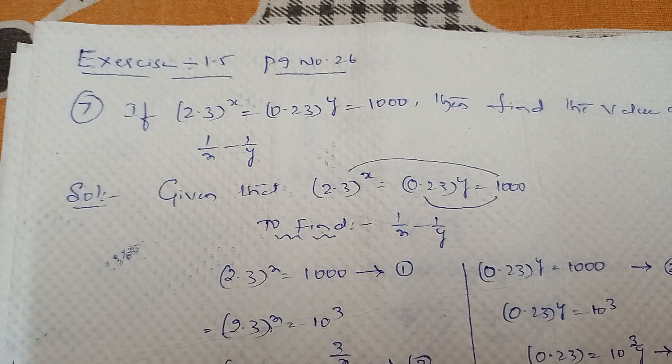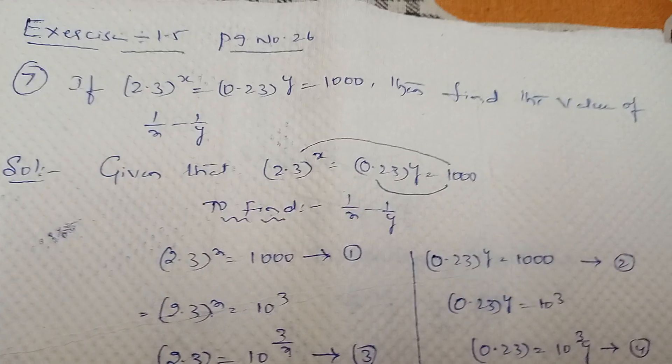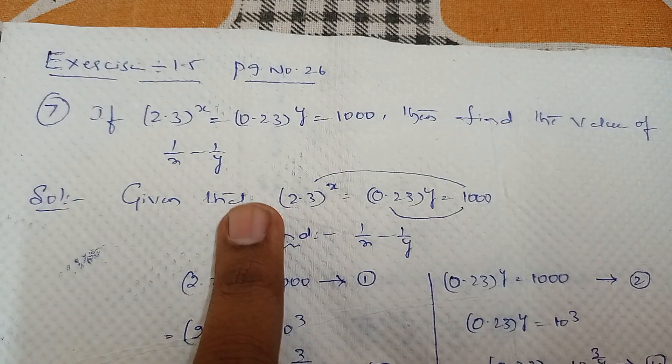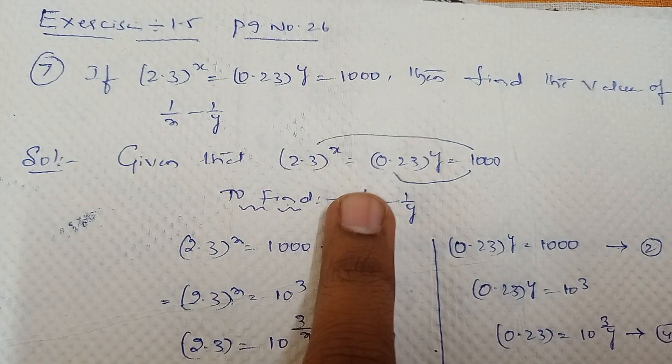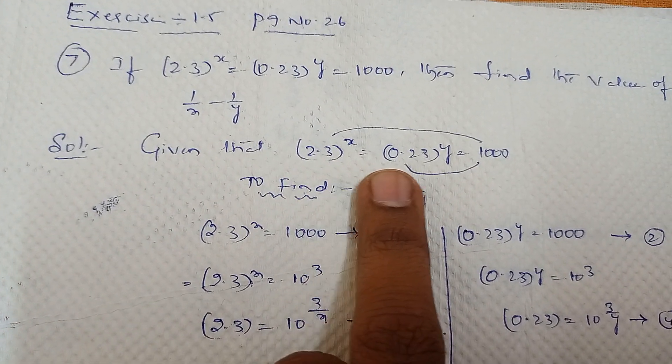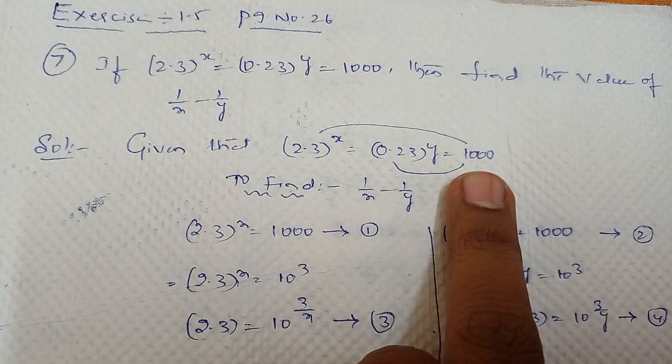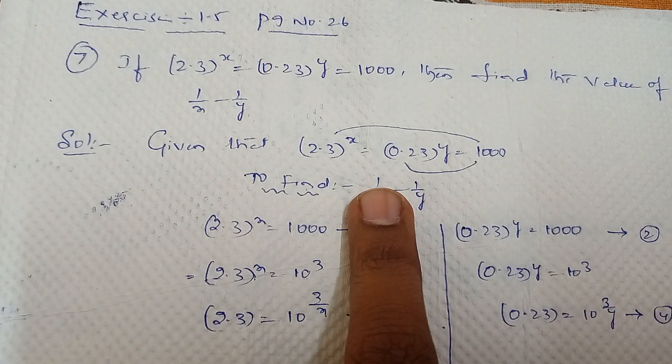If 2.3 whole power x equal to 0.23 whole power y equal to 1000, then find the value of 1 by x minus 1 by y. Take the given value. So here they gave 2.3 whole power x equal to 0.23 whole power y equal to 1000. So here two equal conditions are there.